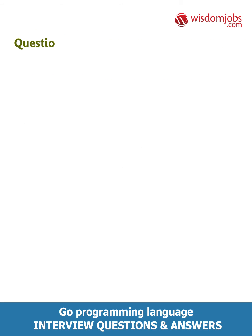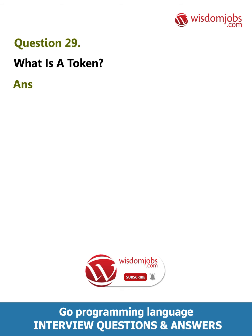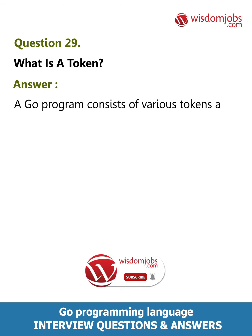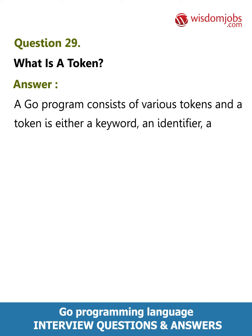Question 29: What is a token? Answer: A Go program consists of various tokens, and a token is either a keyword, an identifier, a constant, a string literal, or a symbol.